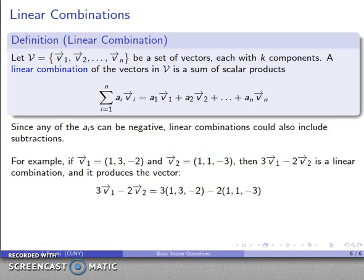So my scalar multiple 3v1 minus 2v2. So I'll do the scalar multiple there. That's 3 times those components. That's going to be (3, 9, -6). That's 2 times these components. That'll be (2, 2, -6). And now I'll do the subtraction component-wise.